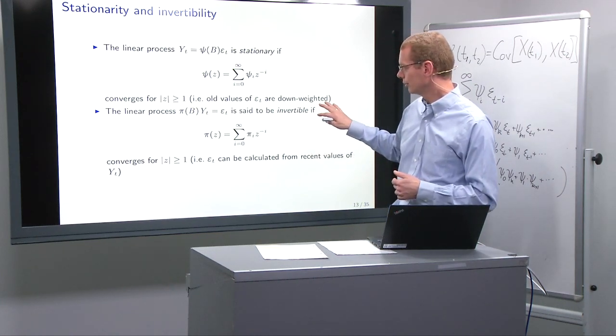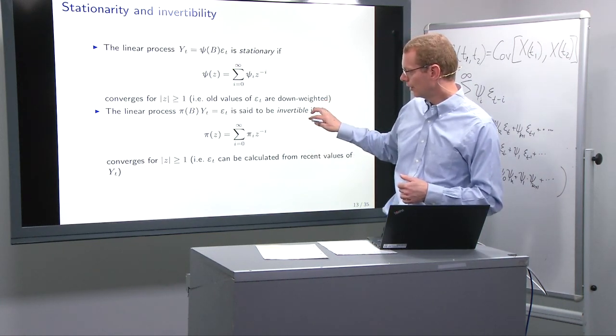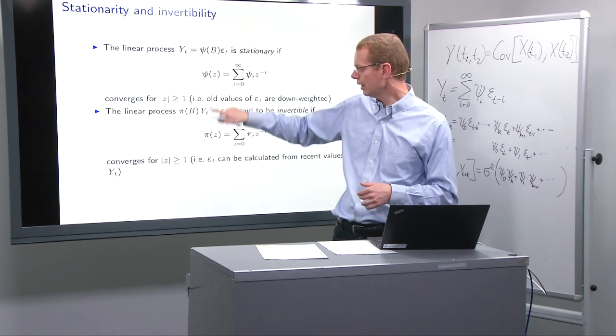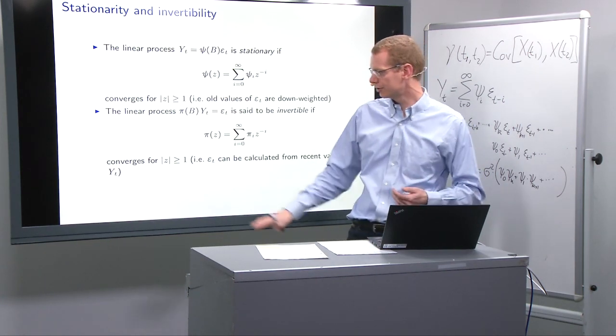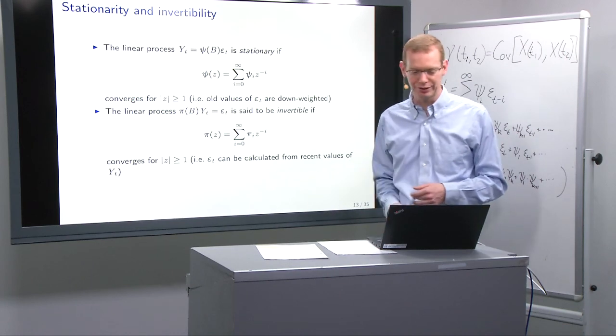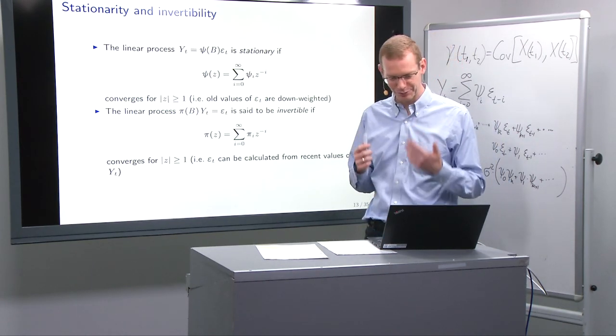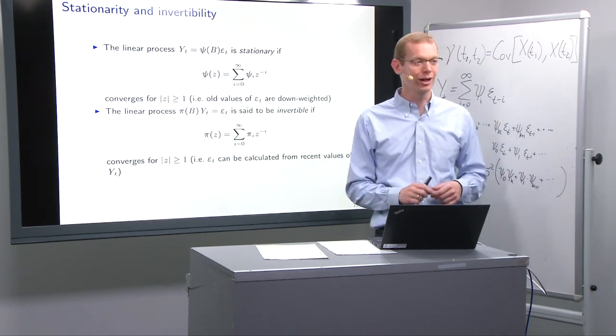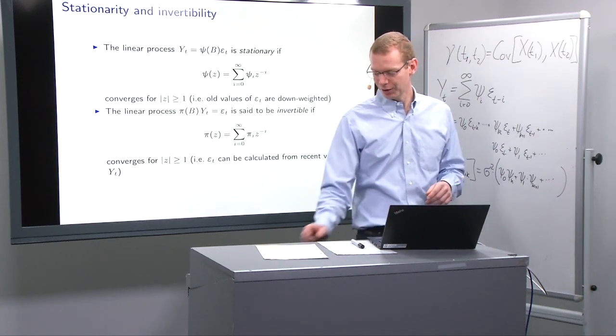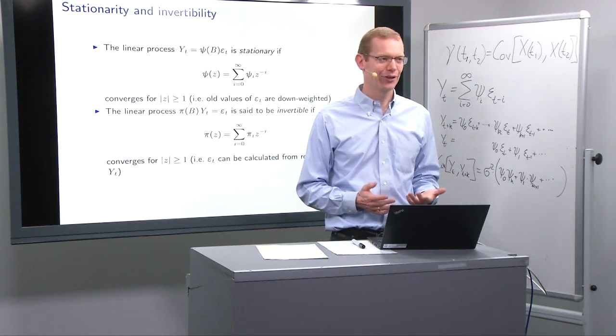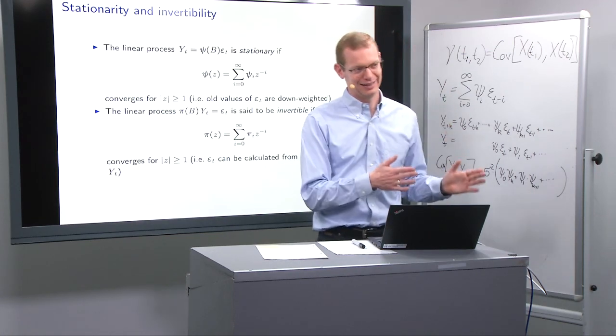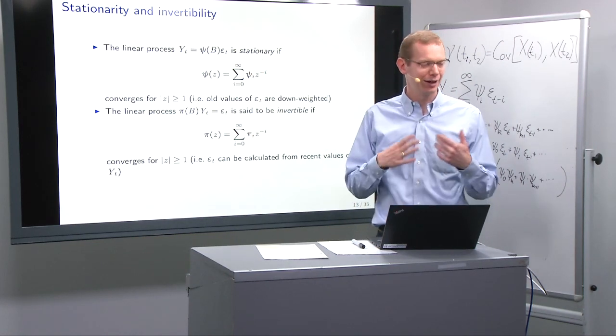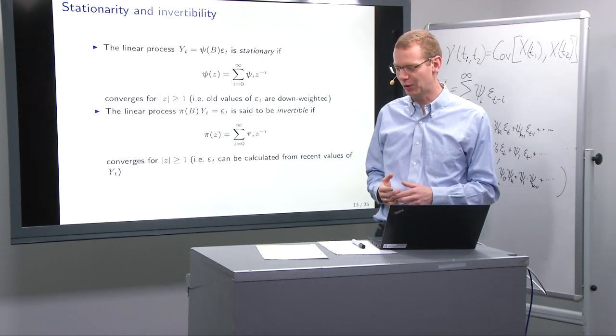A linear process is said to be invertible if the inverse polynomial of ψ, namely the π polynomial, converges in the same sense. So those are the core definitions here. Typically most of us don't want or like to work too much with infinite polynomials, but that is how things are. You start somewhere, and then in a later part we'll restrict ourselves to finite polynomials and look at what that means for what we're doing.